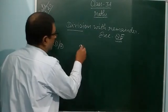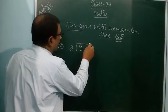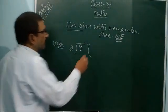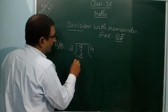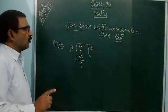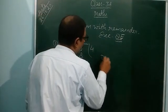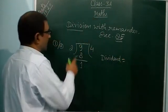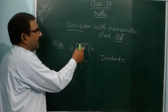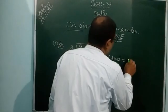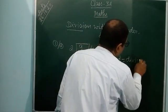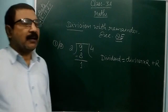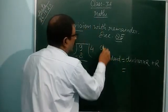Question 1a: 9 divided by 2. Count the table of 2 — not more than 9. 2×4=8, so 4 times 2 goes into 9. 9 minus 8 equals 1, so 1 is the remainder. The formula is: Dividend = Divisor × Quotient + Remainder. Here 9 is the dividend, 2 is the divisor, 4 is the quotient, and 1 is the remainder.